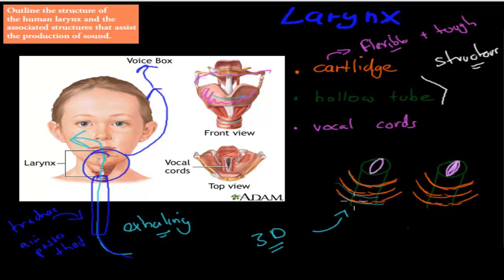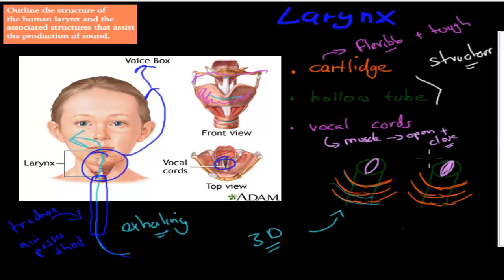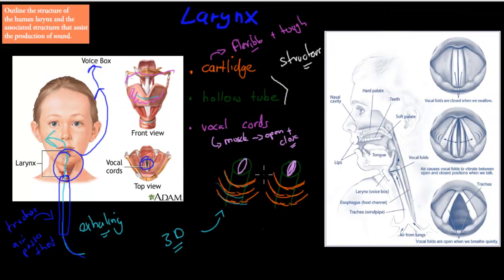Inside the hollow tube, at the upper section, we can find the vocal cords. The vocal cords are muscles that can open and close — they can have different levels of opening and closing. When they open and close repeatedly, that's when they're vibrating, and that's when sound gets produced. Depending on how open or how closed they are, vibrations happen and sound is produced.